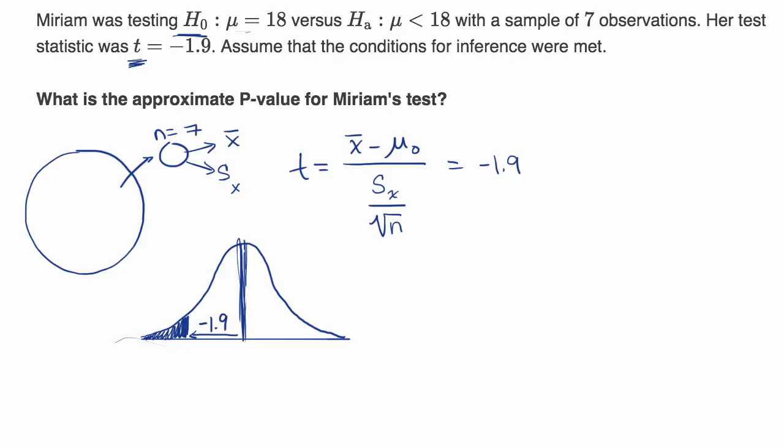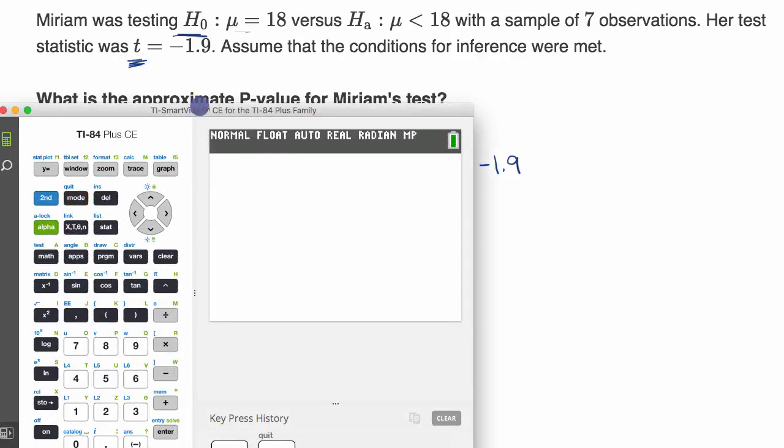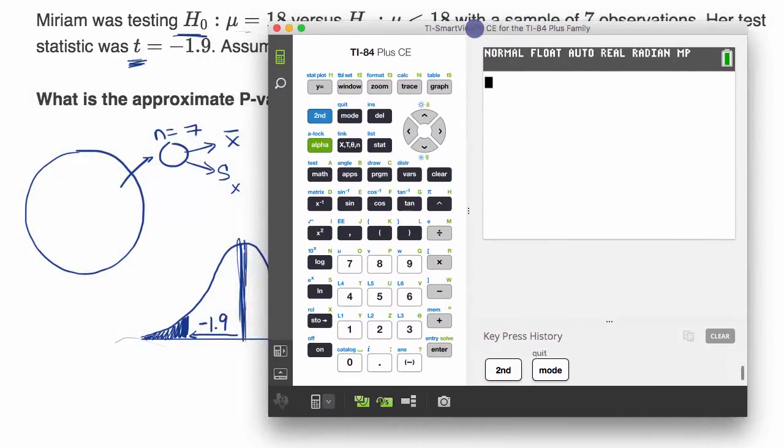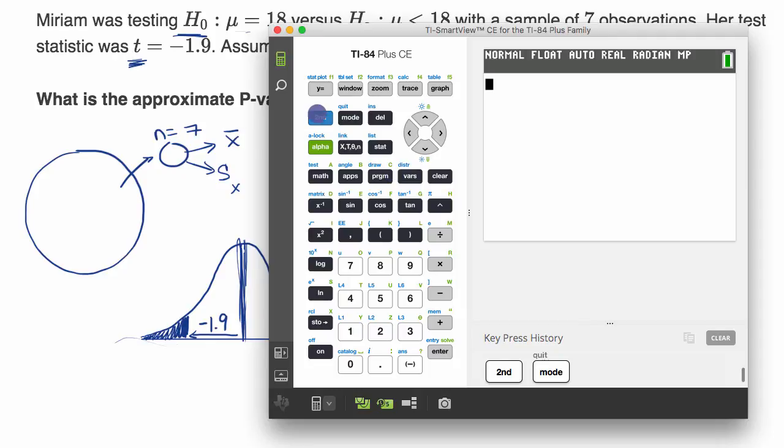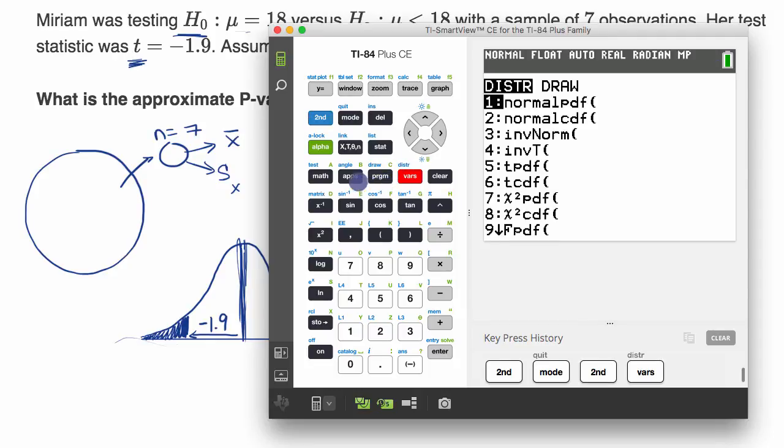And so I'm gonna do this with a TI-84, at least an emulator of a TI-84. And all we have to do is go to second distribution, and then I would use the t-cumulative distribution function. So let's go there, that's the number six right there. Click enter.